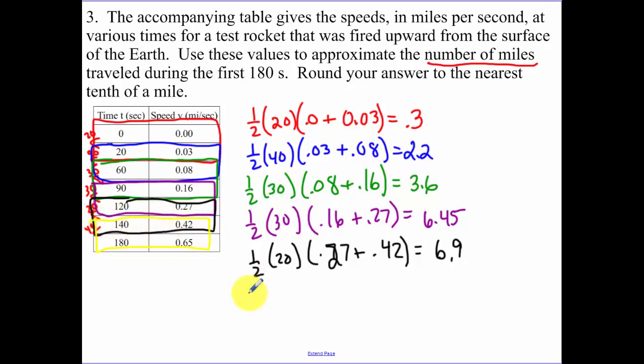And then our last one. 1/2, the height is 40, base one is 0.42, base two is 0.65. That one was 21.4. So now we add all those together because that's going to give me my total area to get 40.85. They want it to the nearest tenth, so that's 40.9 miles.